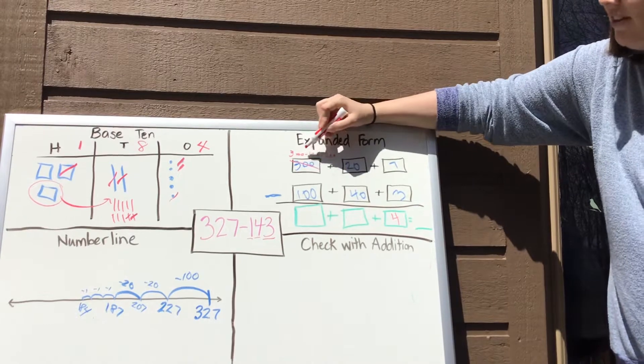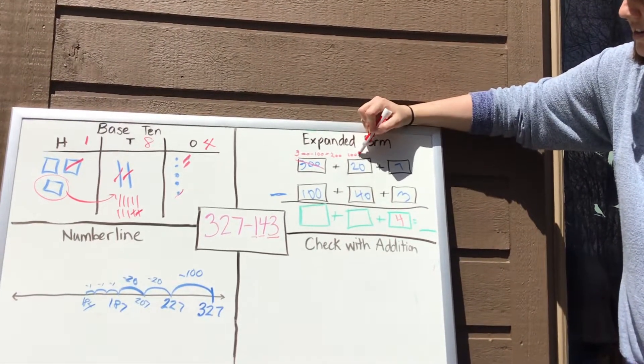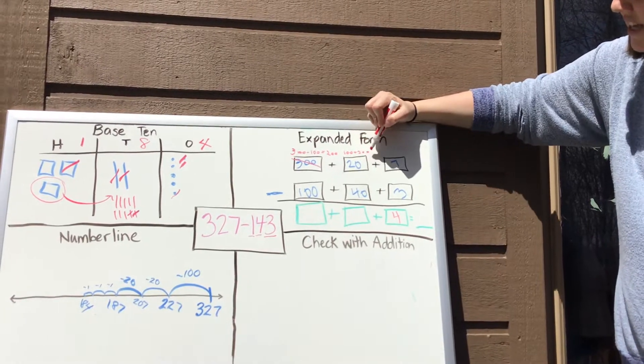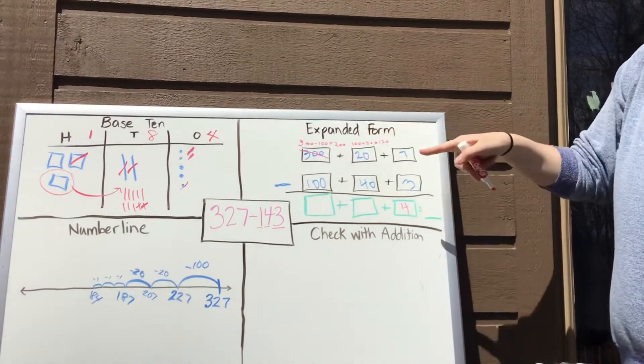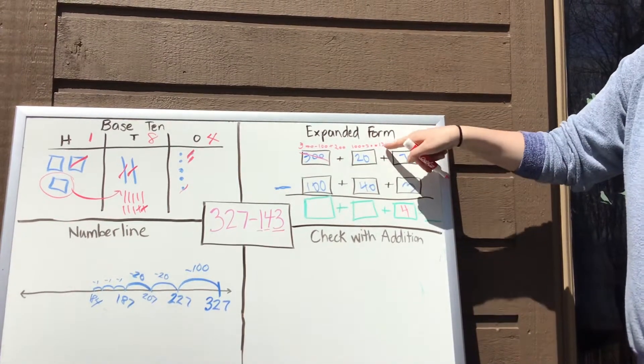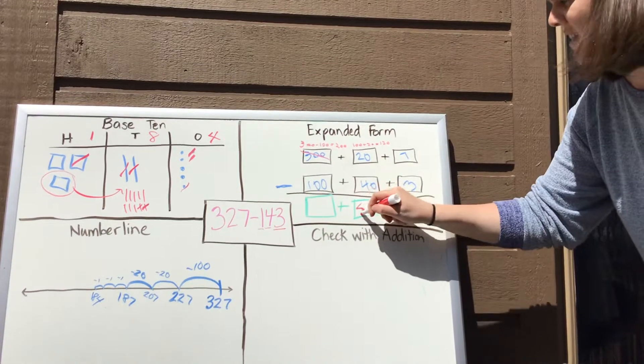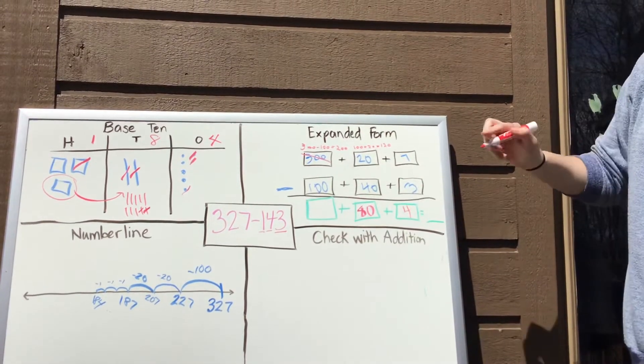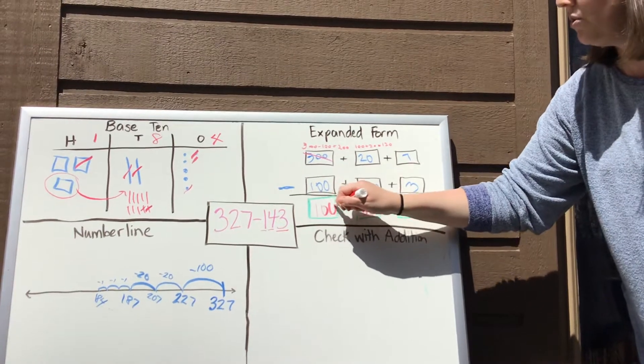And then we're going to add that 100 that we subtracted into our 20 that we have here. And that's going to give us 120 or 12 tens. So 10 tens plus 2 tens is 12 tens. So now I can say 120 minus 40. And that's going to get me to 80. And then 200 minus 100 is going to get me to 100.